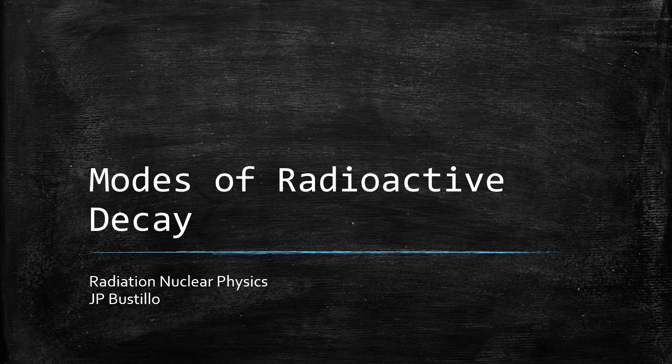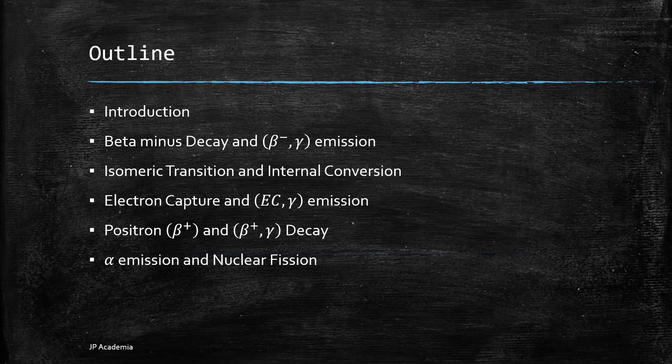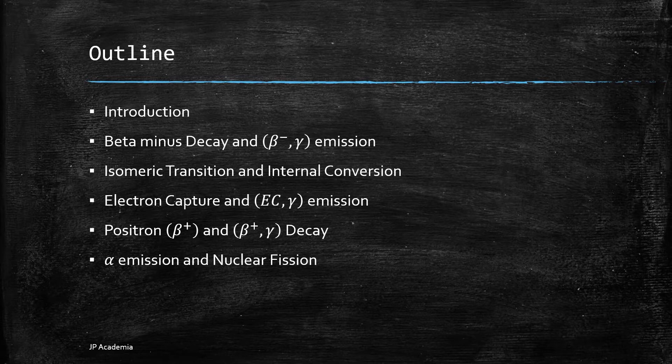In this lecture, I will discuss the different modes of radioactive decay. I will start by introducing the terminologies used in radioactive decay discussion followed by the modes that include beta minus decay, isomeric transition, internal conversion, electron capture, positron emission, alpha emission, nuclear fission, and a short discussion of the application and summary.